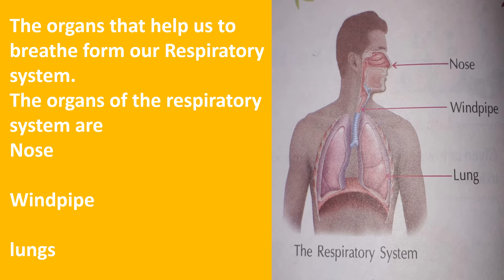These parts work together to move oxygen throughout the body and clean out waste gases like carbon dioxide. The organs that help us to breathe form our respiratory system. The organs of the respiratory system are nose, windpipe, and lungs. In the diagram of the respiratory system, you can see the organs are given.